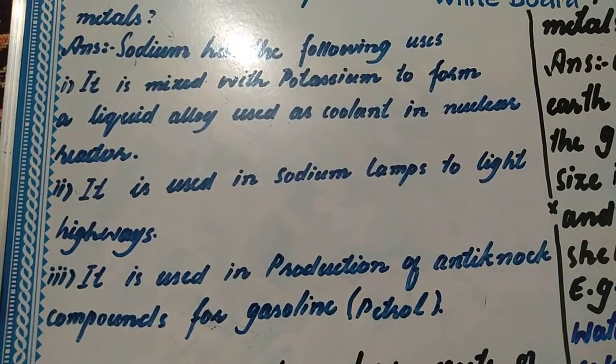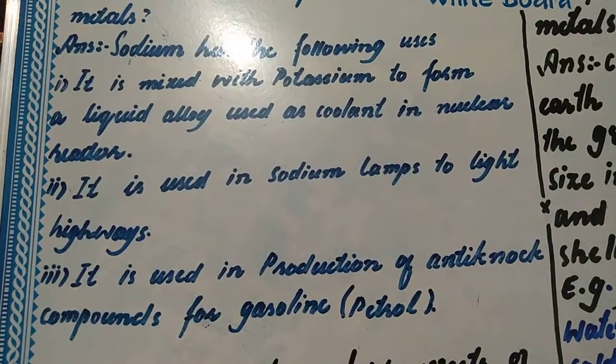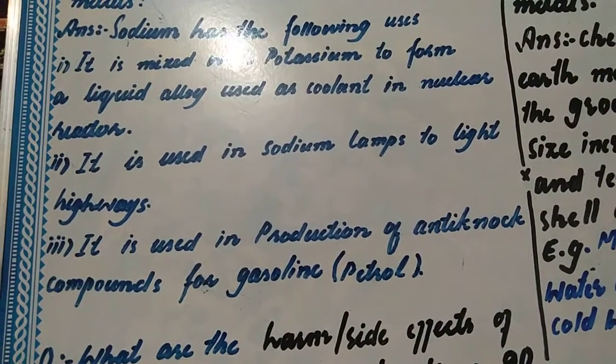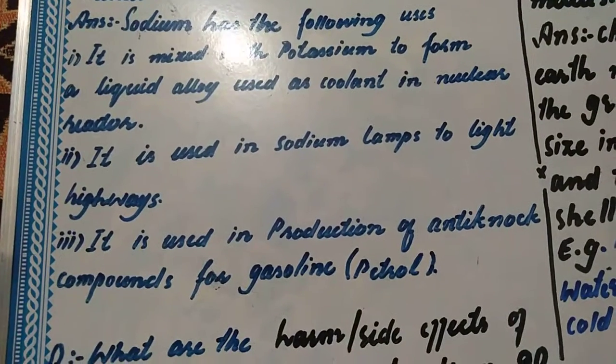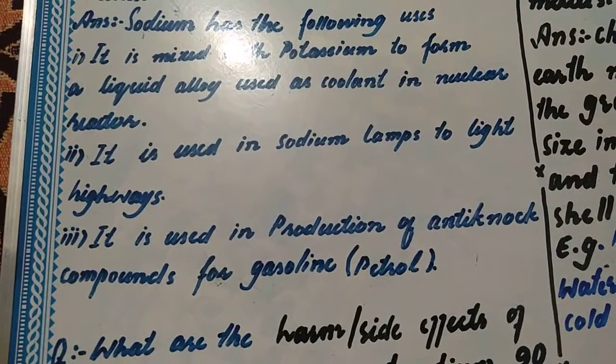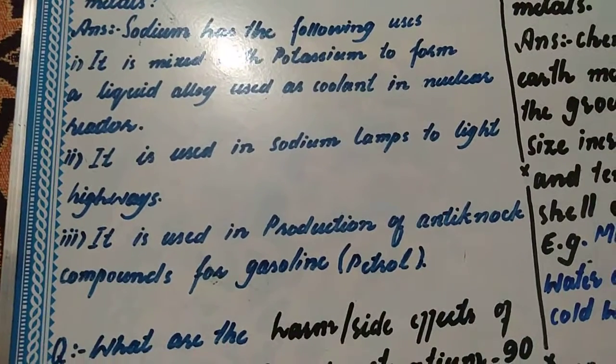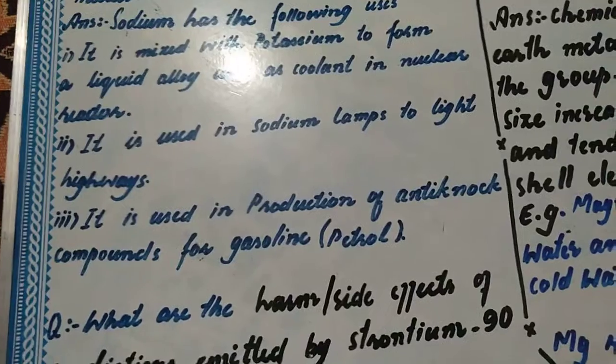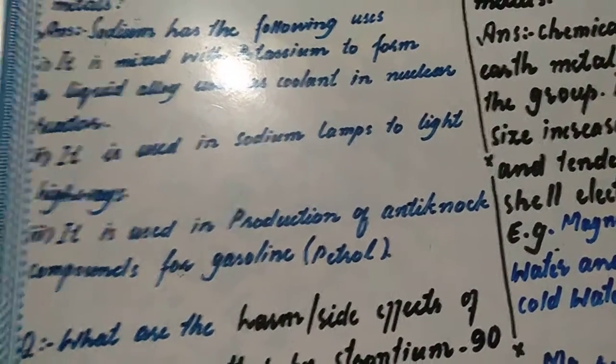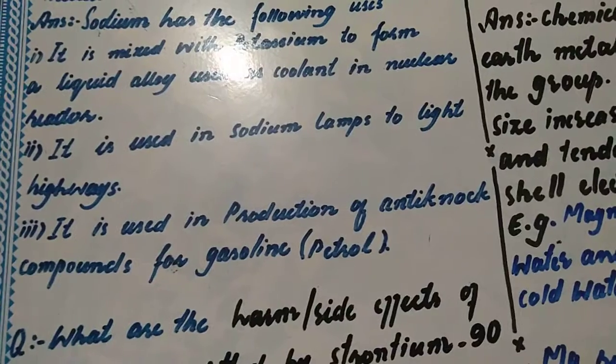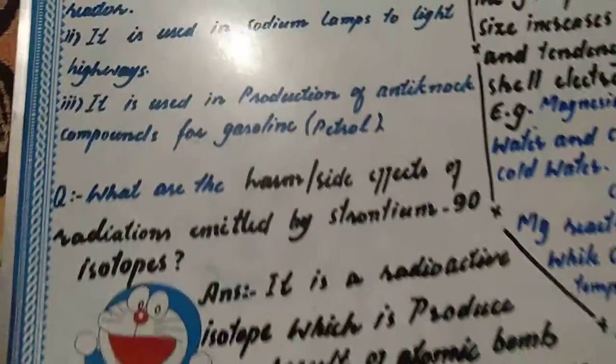Orange color lights are used in sodium lamps to lighten cities and highways. The third use is that it is used in production of anti-knock compounds for gasoline or petrol. In the petroleum industry, sodium is mostly used in these compounds.